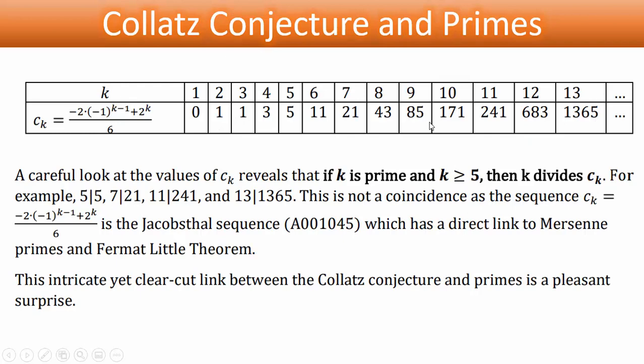I'll just read this. A careful look at the values of c_k reveals that if k is prime and k is greater than or equal to 5, then k divides c_k. For example, 5 divides 5. We can see here, 7 divides 21. 11 divides 241. 13 divides 1,365. And this is remarkable.